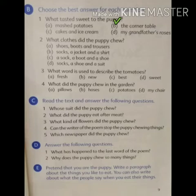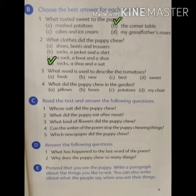Second question is: what clothes did the puppy chew? Puppy ने कपड़ों में क्या चबाया? A. Shoes, boots and trousers. B. Socks, a jacket and a shirt. C. A sock, a boot and a shoe. D. Socks, a shoe and a suit. And the correct answer is D: socks, a shoe and a suit.